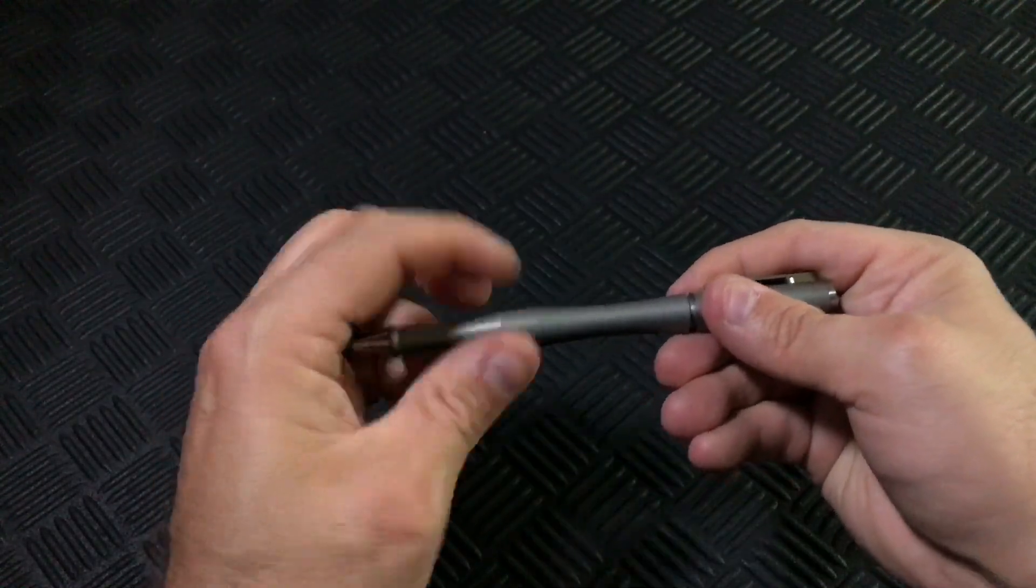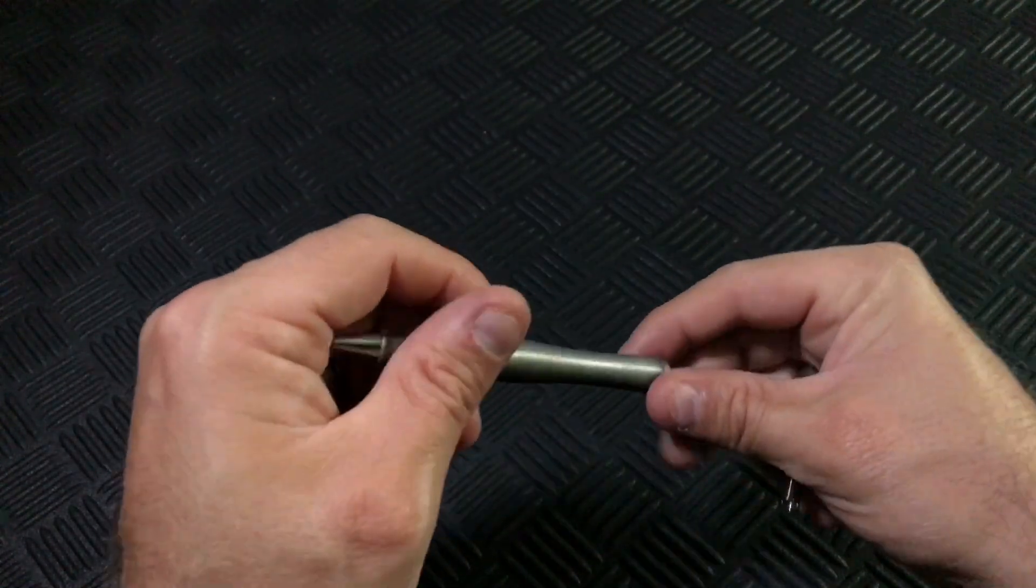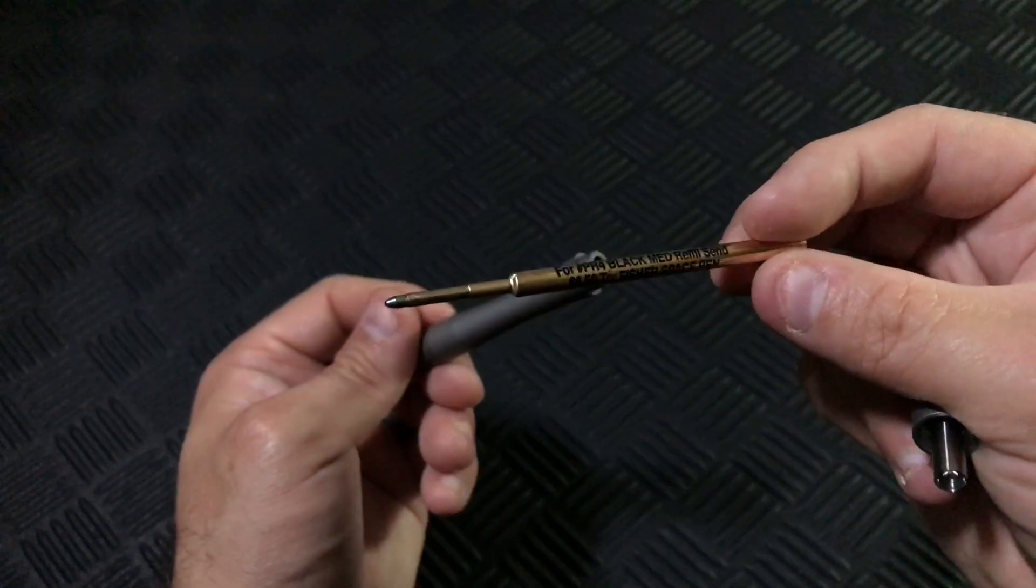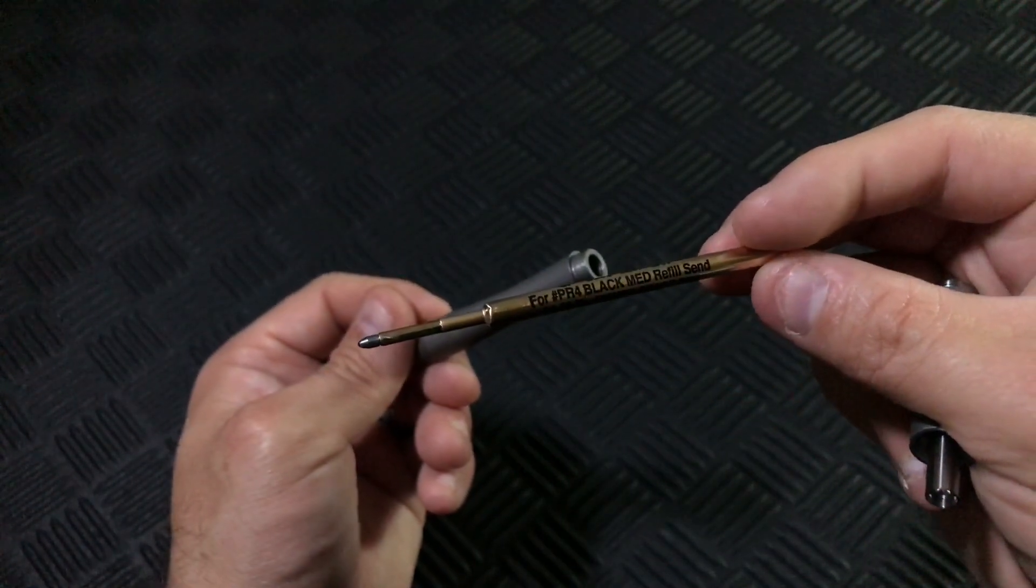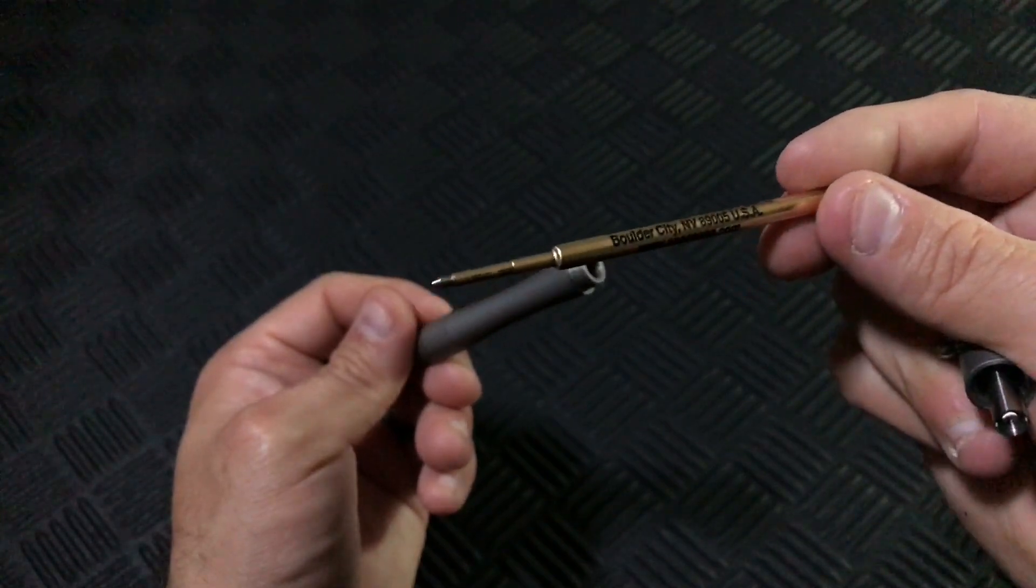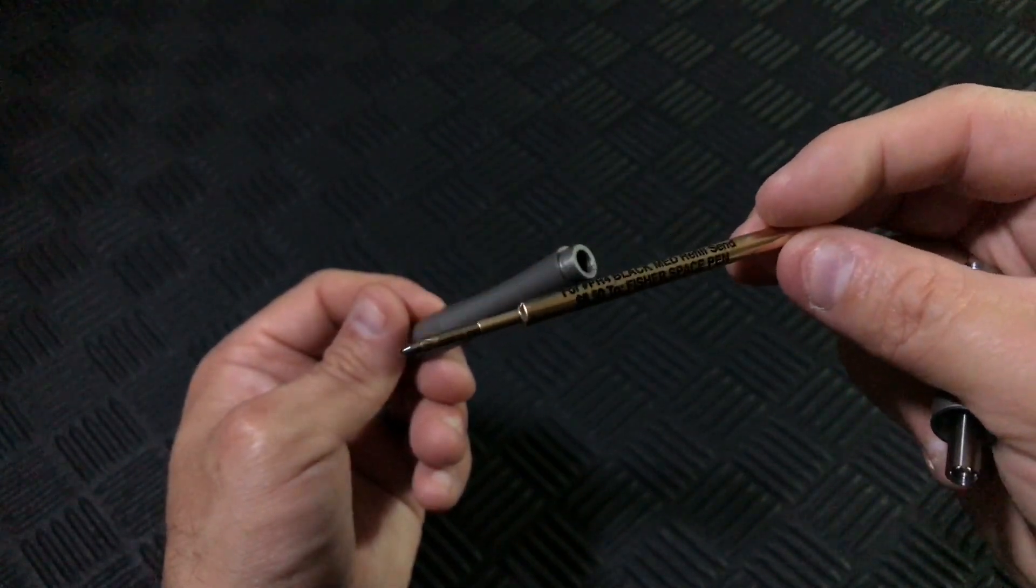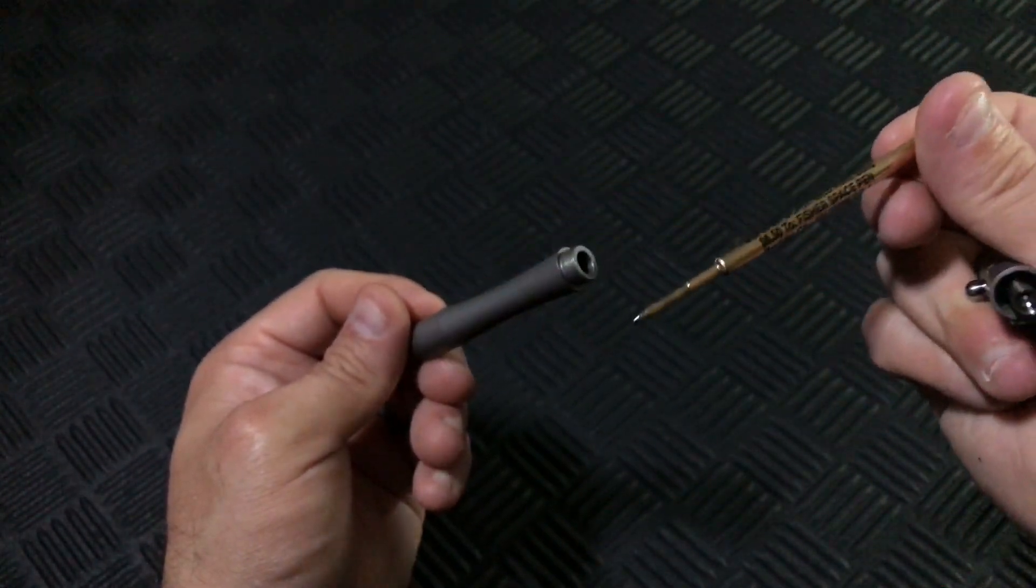For starters, the Dark Zero uses the popular Fisher Space pressurized ink cartridge, so it can write at any angle, even upside down. It can also write in extreme environments, from the freezing cold to incredibly hot, and even in areas with high humidity.